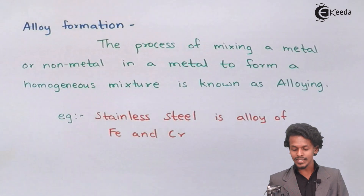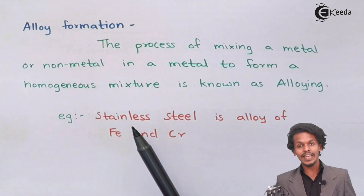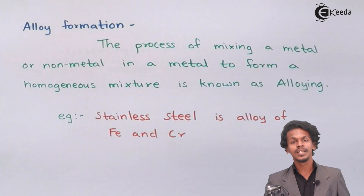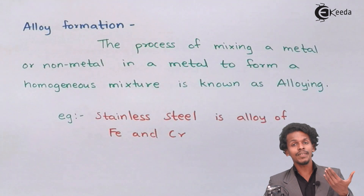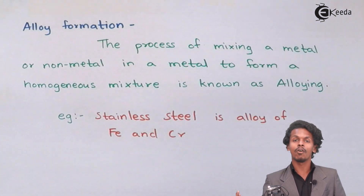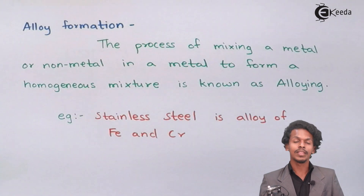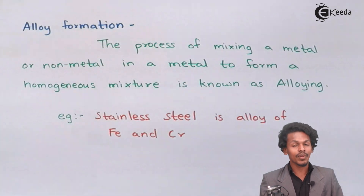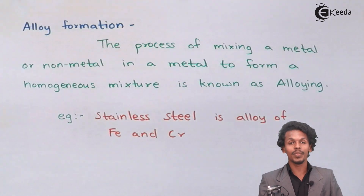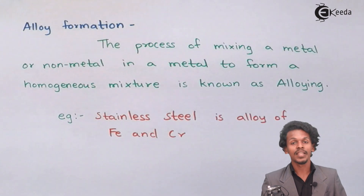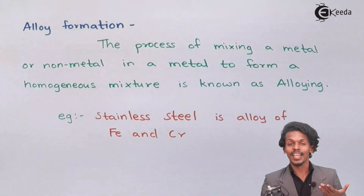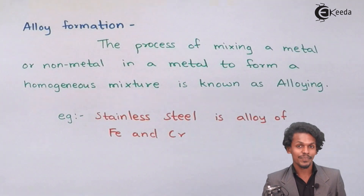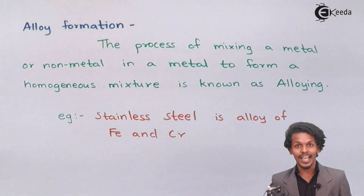Stainless steel is an alloy of Fe, chromium, and other elements. Even if rusting takes place, the chromium will form an oxide that creates a very protective layer on the iron. Hence, this iron in the form of stainless steel can be protected from corrosion by the formation of an alloy.